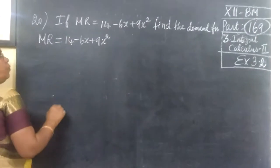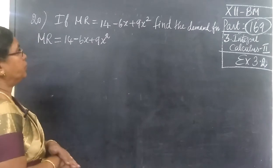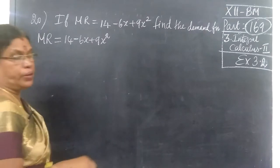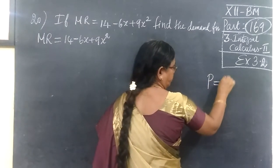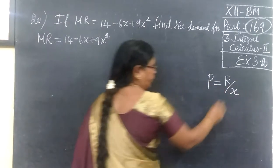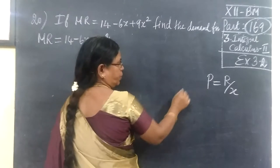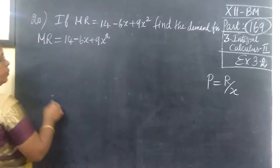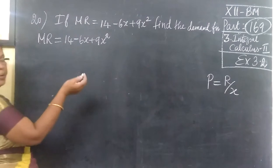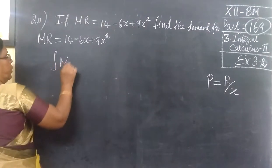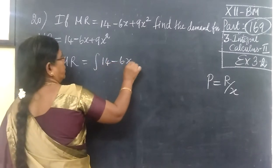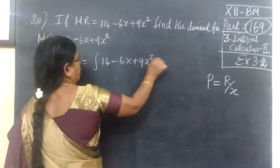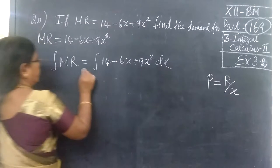You are given marginal revenue function. Demand function formula is P equals R by x. This is demand function, so this is R divided by x.